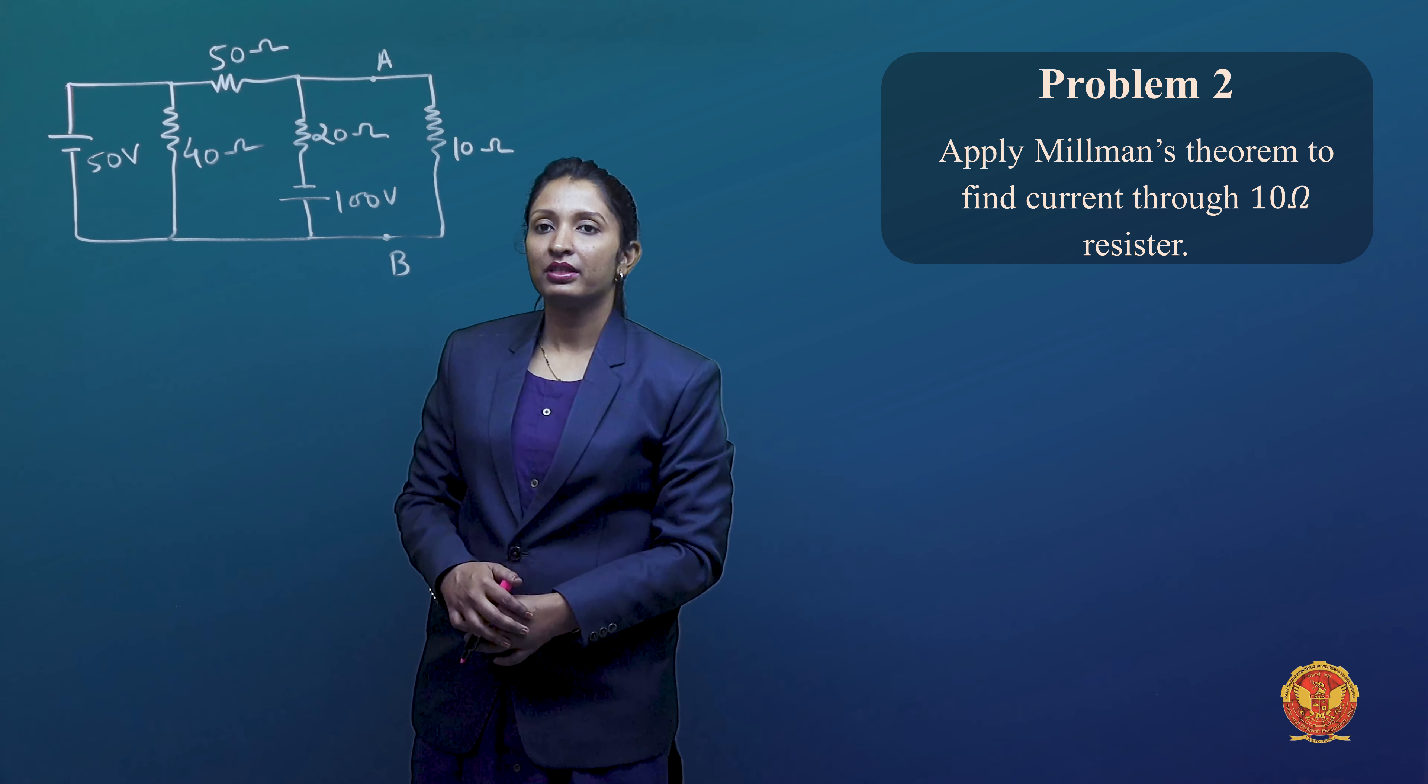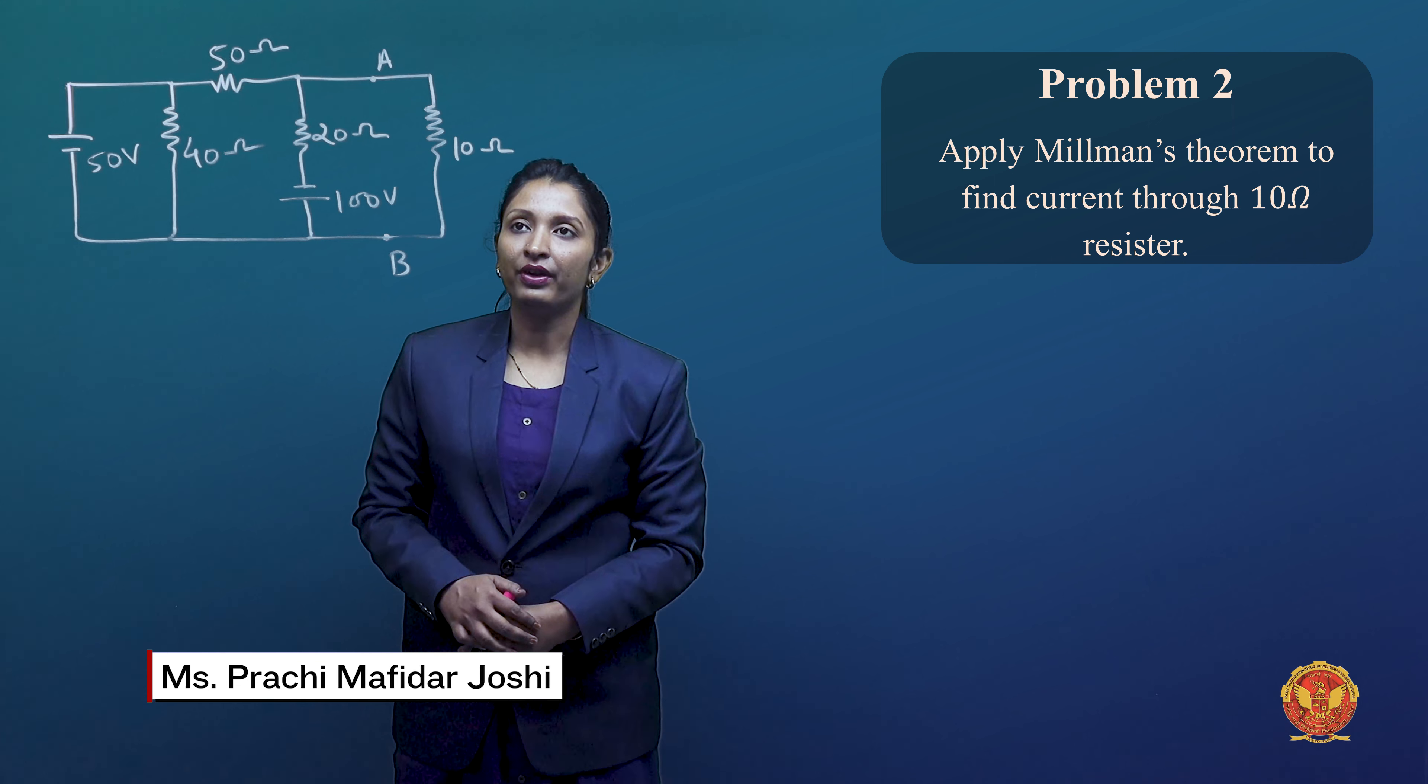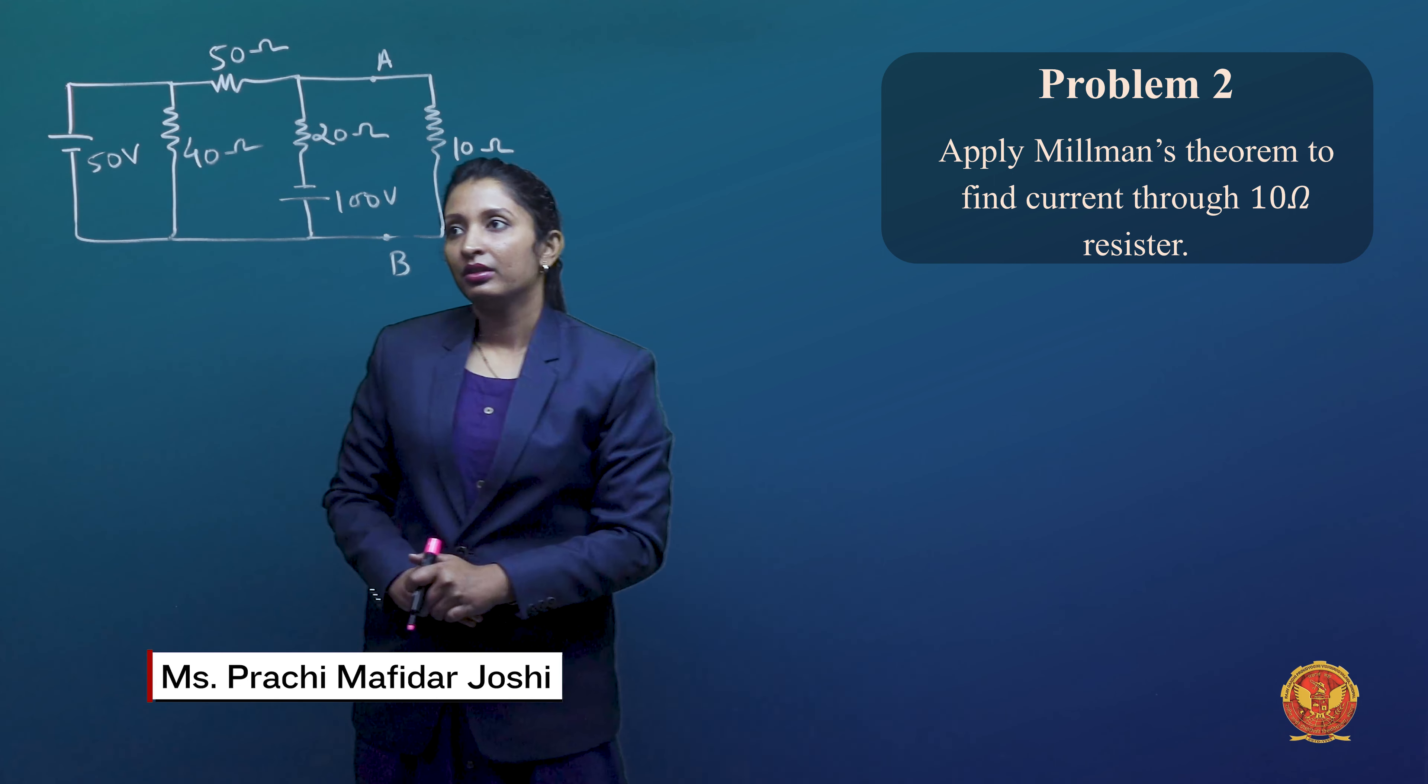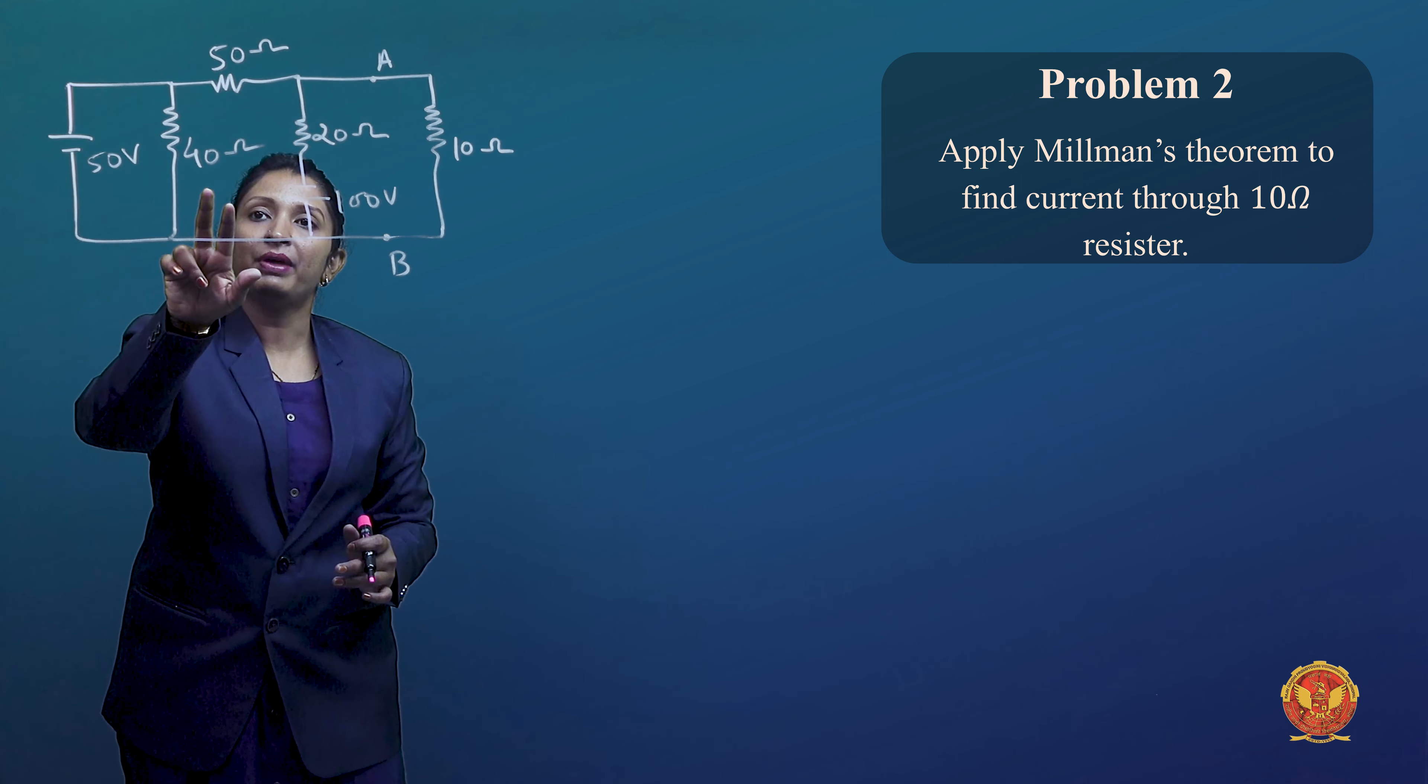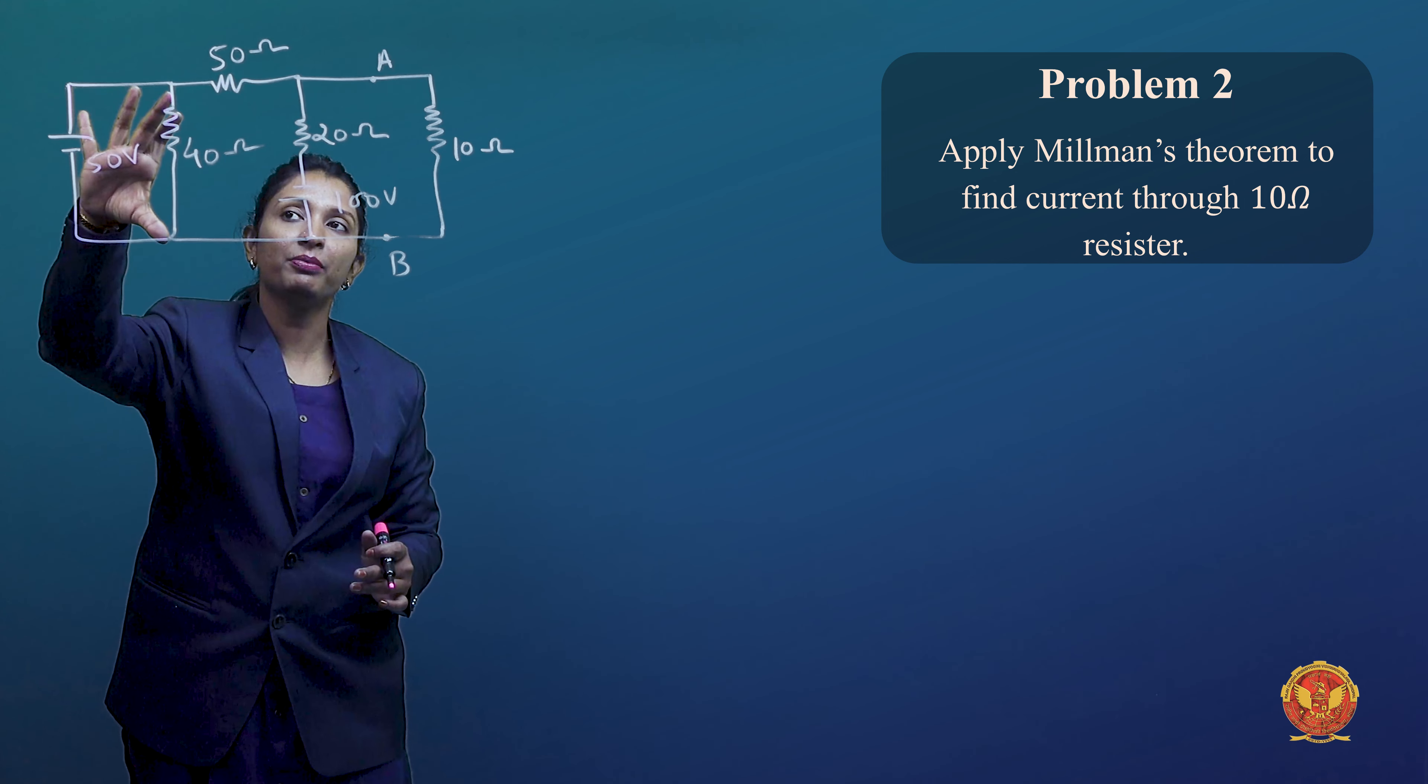Hello everyone, this is a question based on Millman's theorem. Here we have to find the current in this 50V parallel 40 Ohm resistance which is not necessary because our voltage is also 50V.